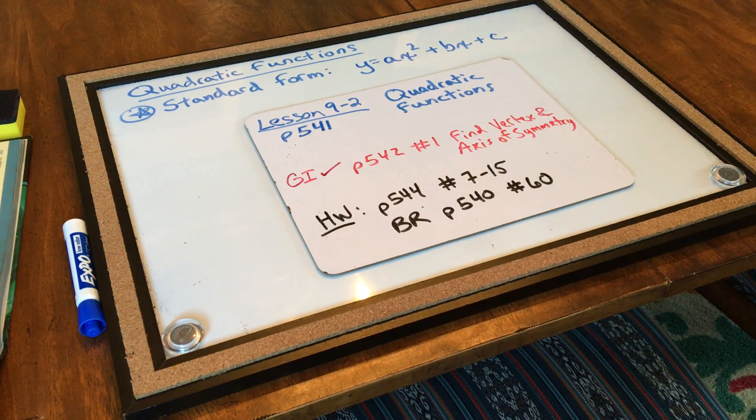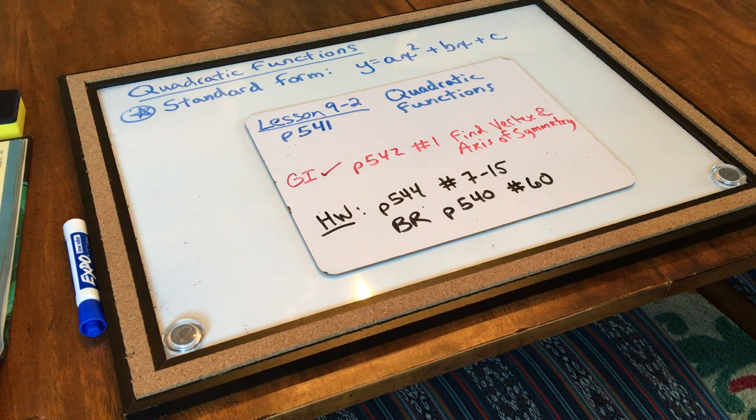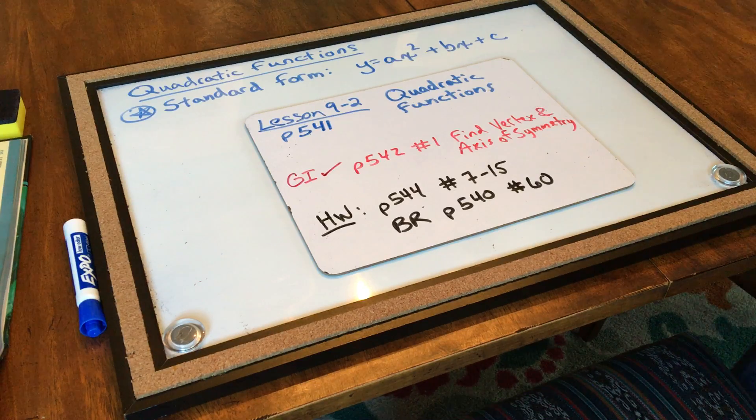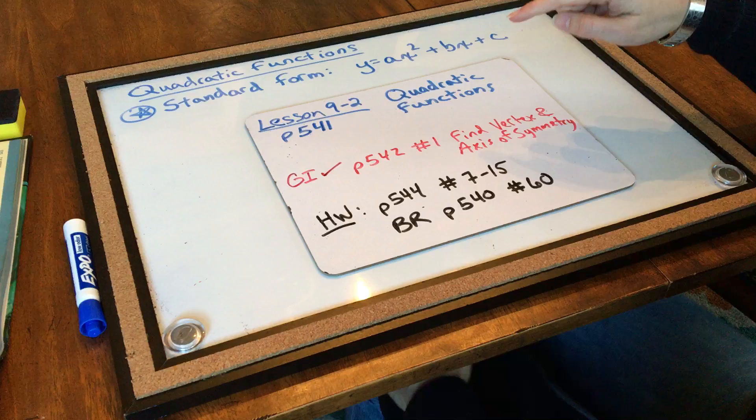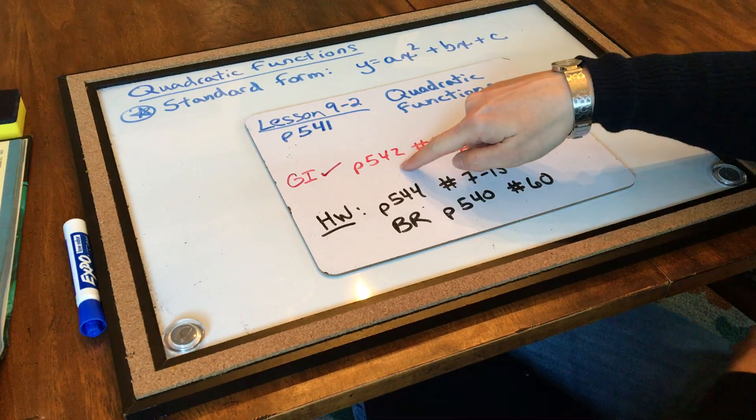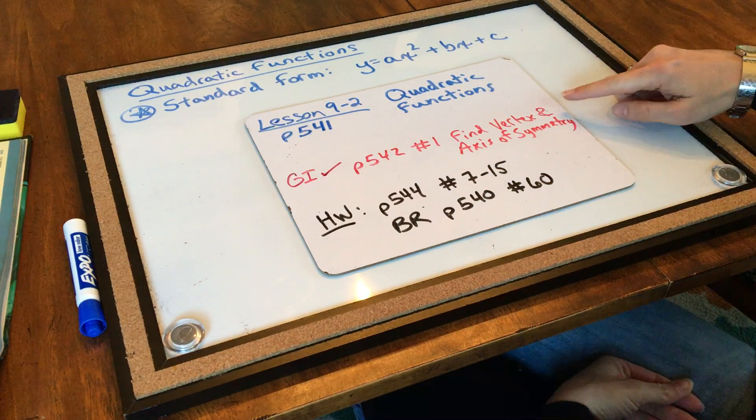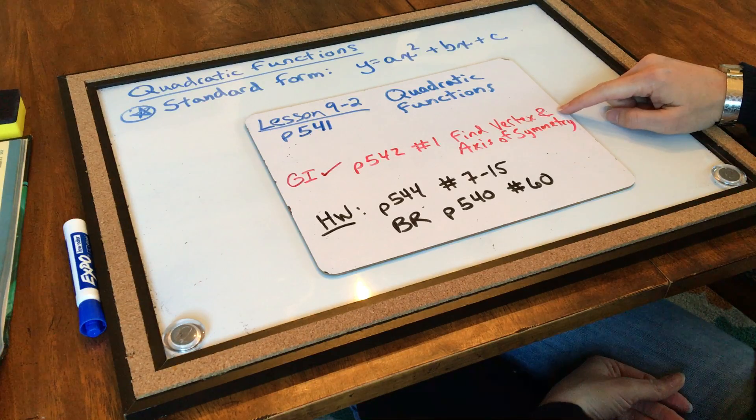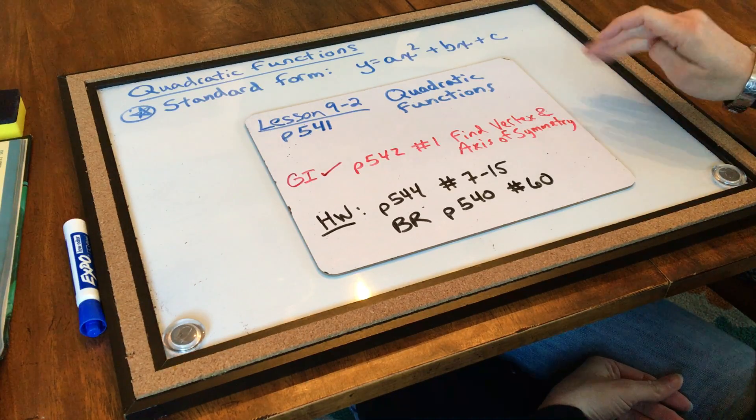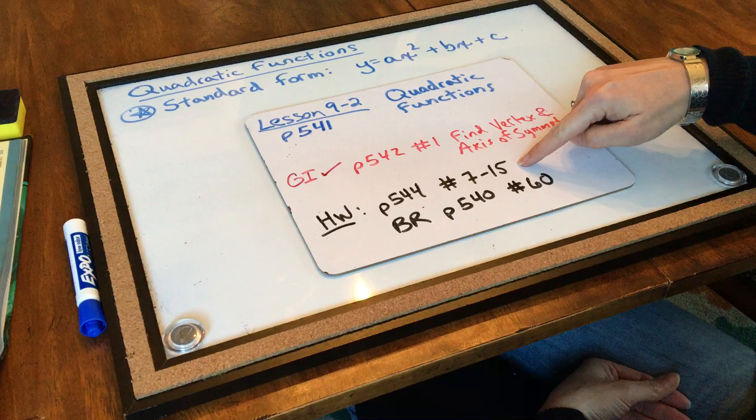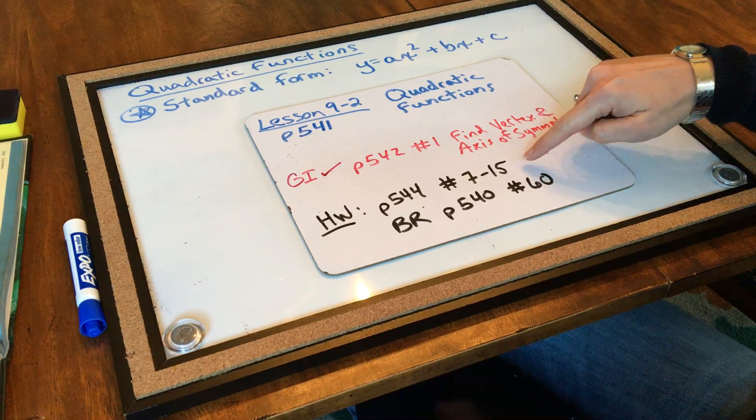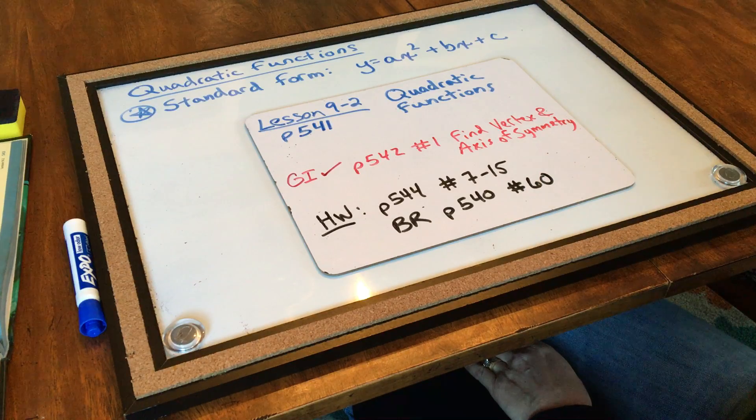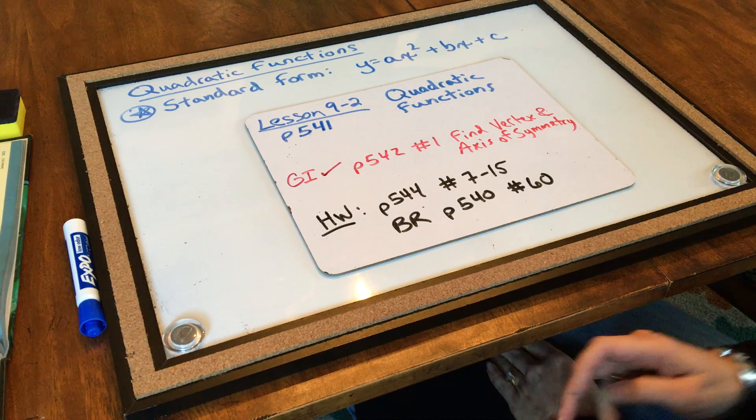Hi, 8th grade. Today we're doing quadratic functions, and that is lesson 9-2. We're going to be working on page 541 to start. Our gotta check is going to be on page 542, number 1. And I just want you to find the vertex and the axis of symmetry. You don't have to graph it completely. And then your homework is going to be page 544, number 7 to 15. And your bell ringer in three sentences is page 540, number 60.